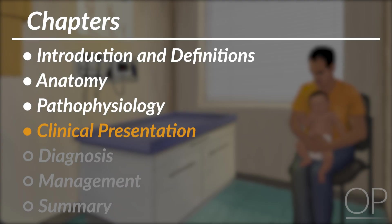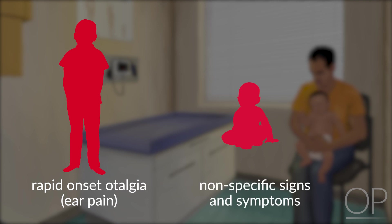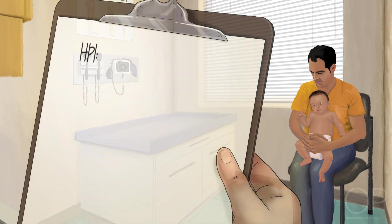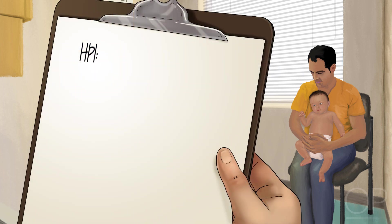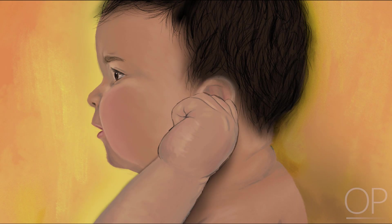Clinical Presentation. The presentation of acute otitis media depends on the age of the child. An older child will classically present with rapid onset otalgia, or ear pain. More commonly, especially in the young pre-verbal child, the presenting symptoms and signs are more nonspecific. There may be a history of initial upper respiratory infection symptoms such as fever, rhinorrhea, or congestion. Other symptoms may include irritability or fussiness, changes in sleep patterns, poor PO intake, vomiting, and or diarrhea. Otalgia may present as tugging or rubbing of the ear.